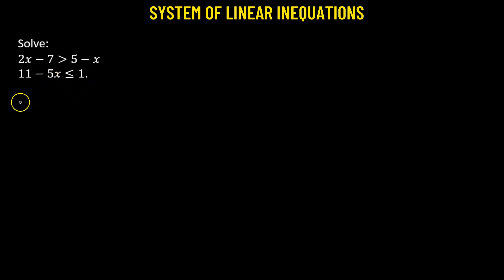Let's solve the following system of linear inequalities. We'll begin with the first inequality: 2x - 7 > 5 - x.